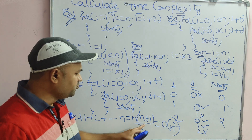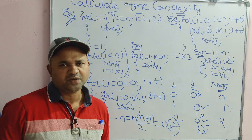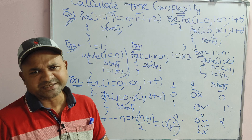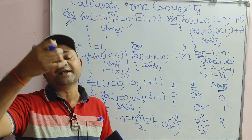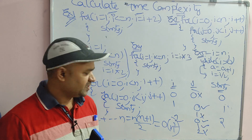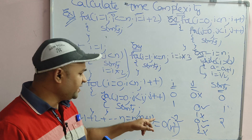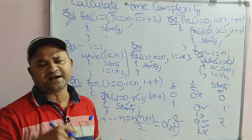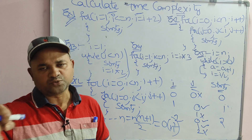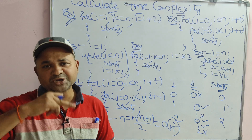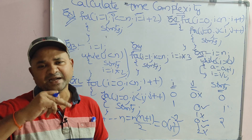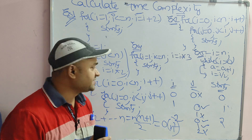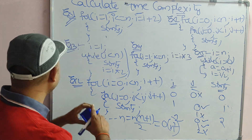The result is n squared by 2 plus n by 2. While calculating time complexity, we consider the higher order exponent. n squared is the higher order term, and we ignore the constant multiplier 1 by 2. So order of n square is the time complexity.